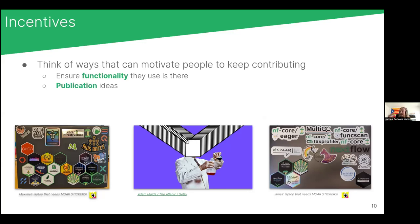Think of publication ideas — particularly in academia this is the main currency to convince PIs or group leaders to actually invest time in developing a pipeline. If you have ideas for three or four different publications, the PI will know their contributor can get something out of it. Be creative: beyond standard papers, you could have protocol papers describing how to use the pipeline in a particular context. And things like logos and stickers give people a sense of ownership.